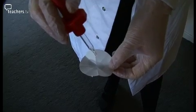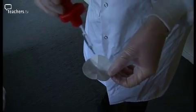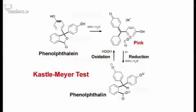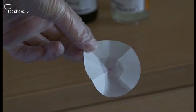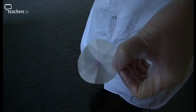The Castlemayer test reacts with the haemoglobin in blood — specifically the peroxidase activity within haemoglobin, which is an enzyme. The peroxidase activity catalyses the decomposition of hydrogen peroxide into oxygen. That oxygen is then passed to the phenolphthalein, causing it to change colour. What we're looking for is a pink colour change. The Castlemayer test is very sensitive — it should be able to detect one drop of blood in an entire bucket of water.